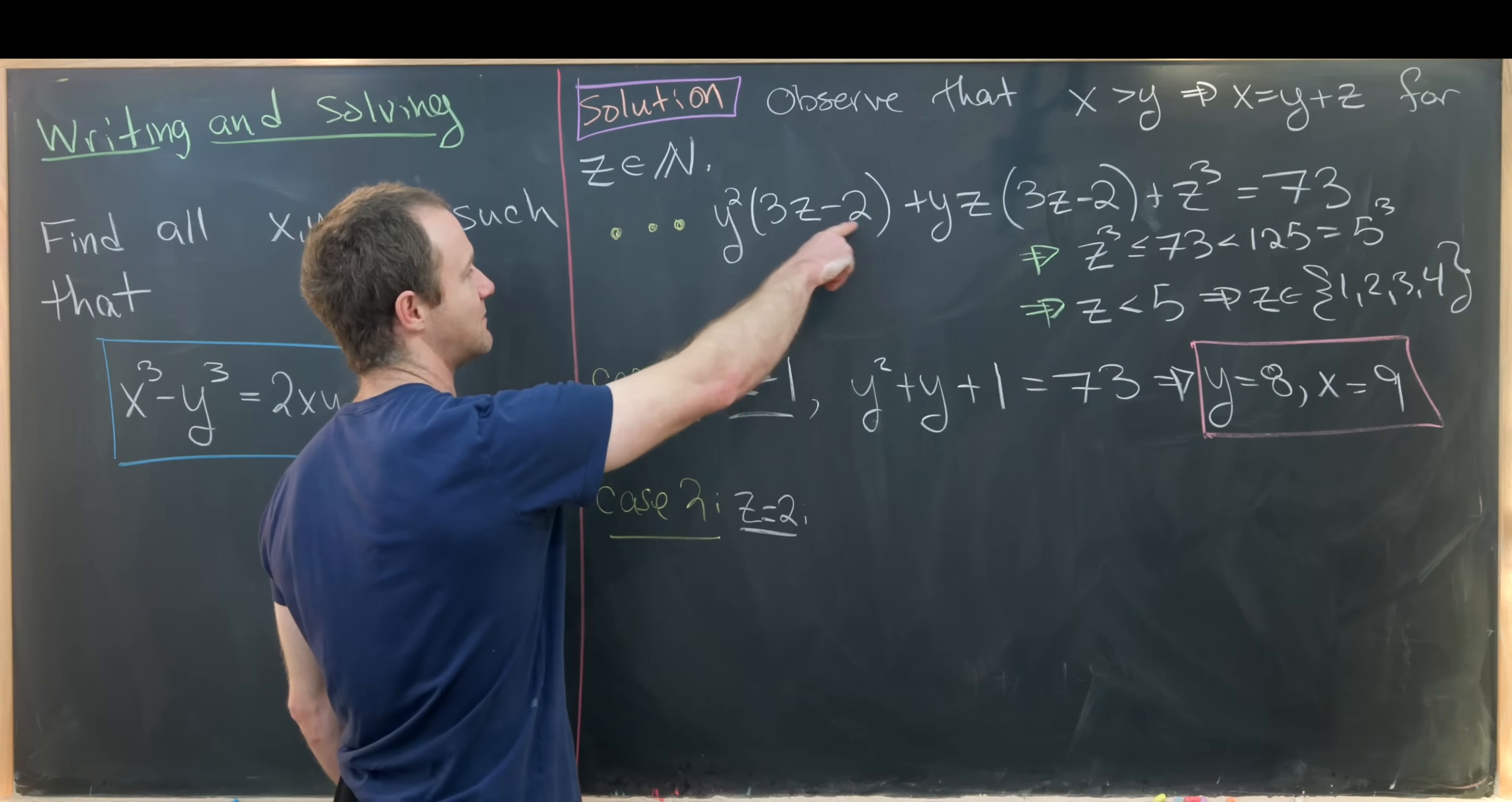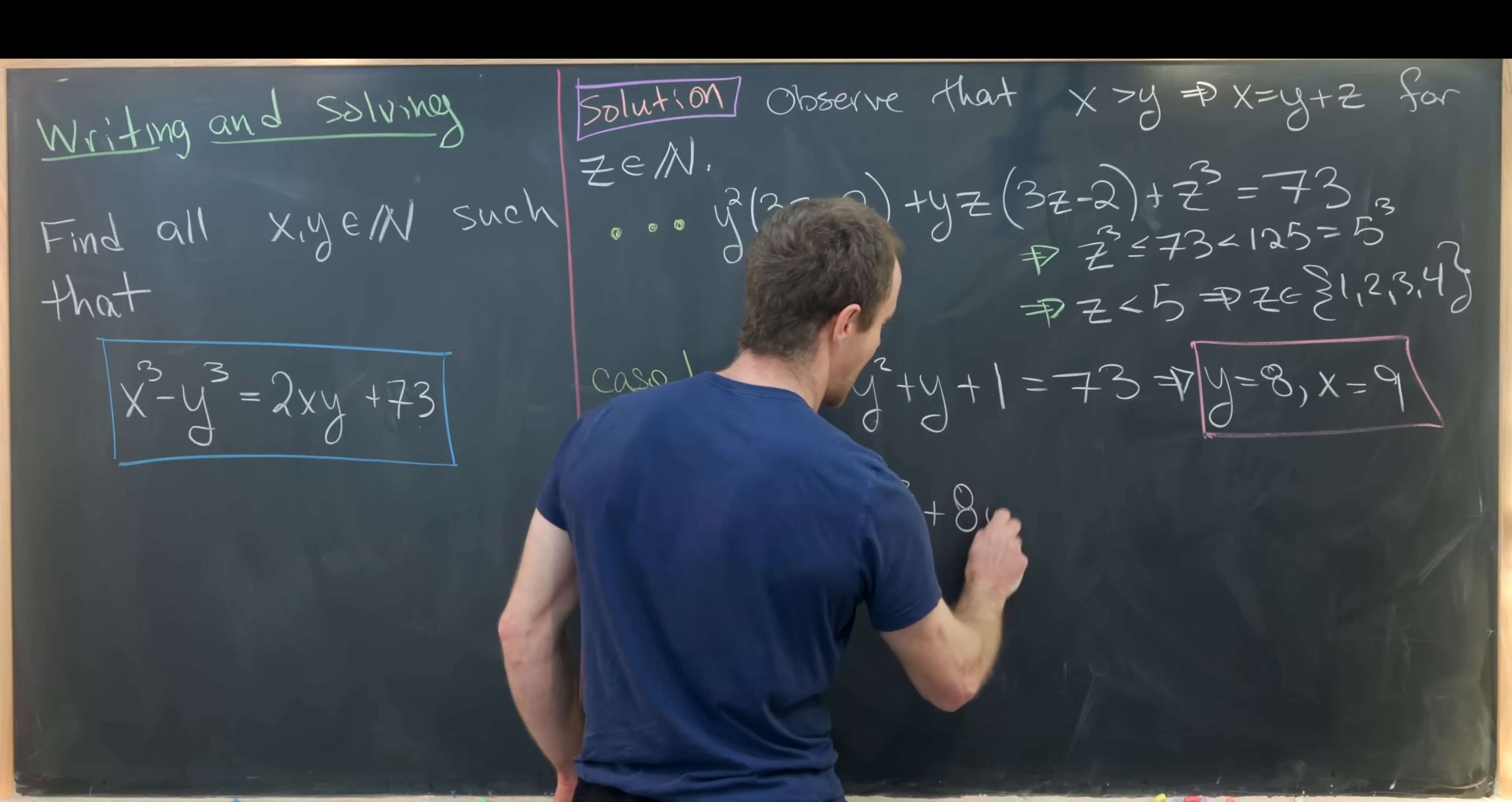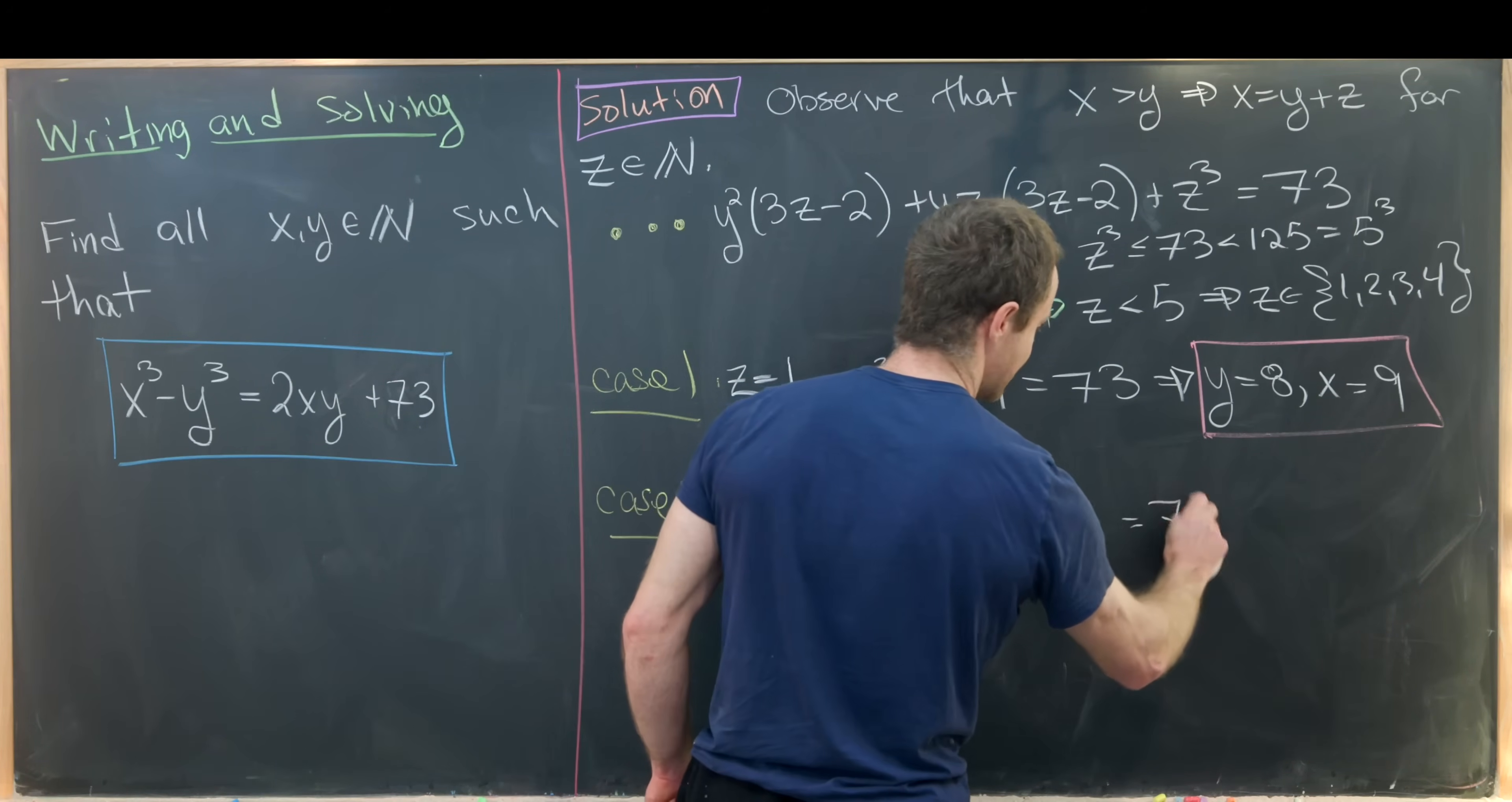So let's see, for our second case we'll take the case when z is equal to 2. So that means we have 4y² and then plus 8y, then 2 cubed is 8 equals 73.